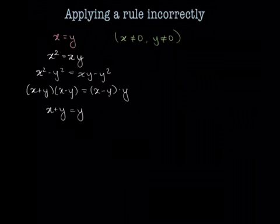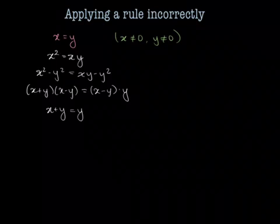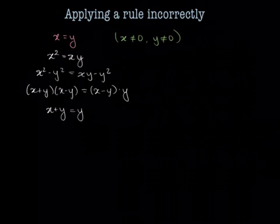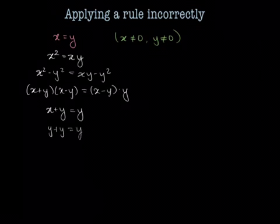Now, if x equals y, so remember up here x equals y, then that means that x plus y is equal to y plus y, so that's equal to 2y is equal to y.